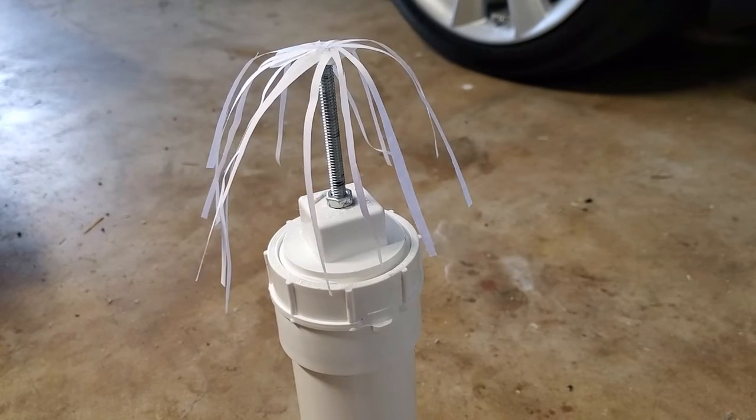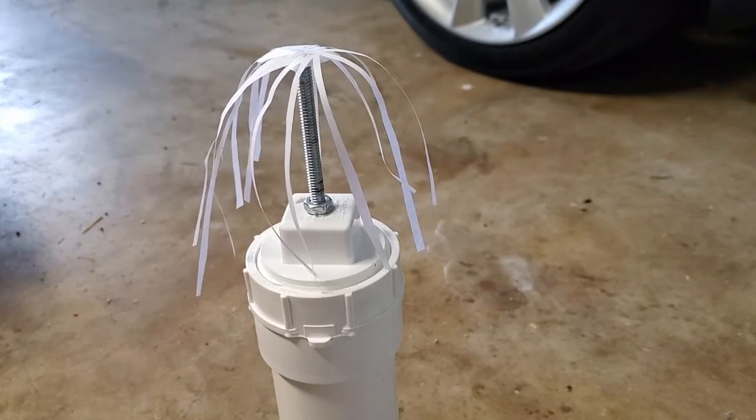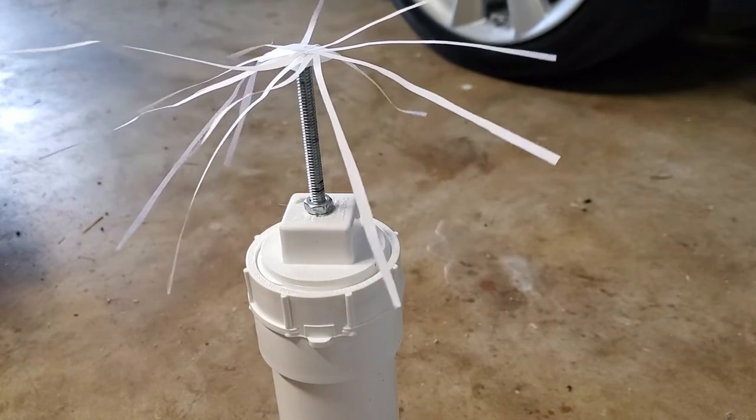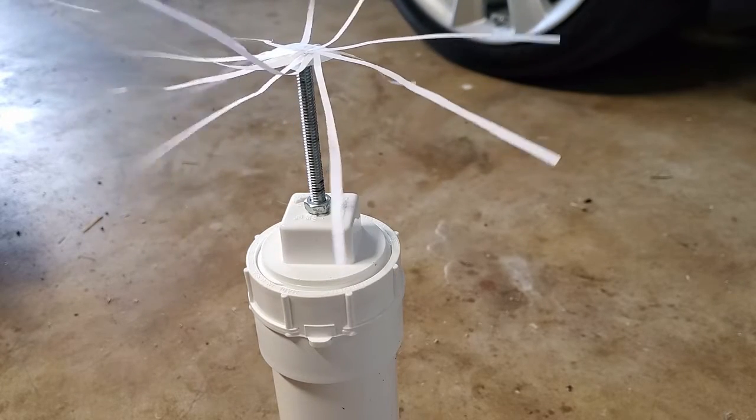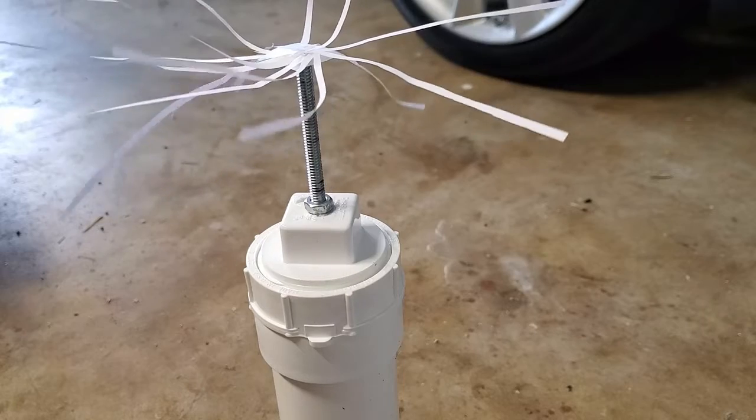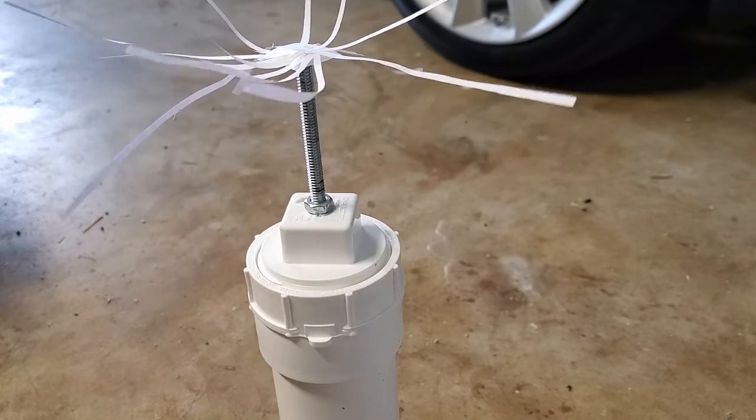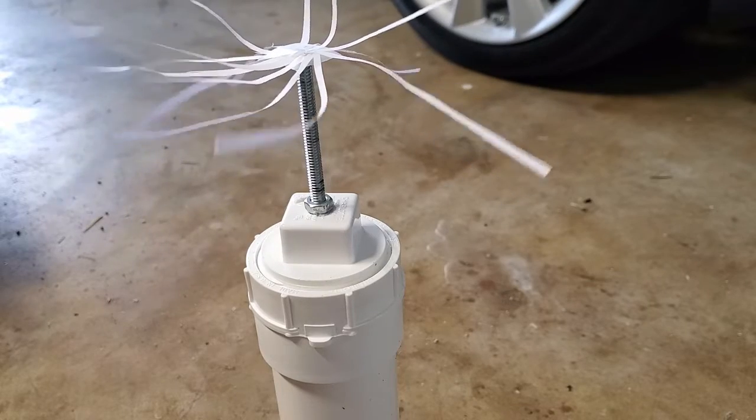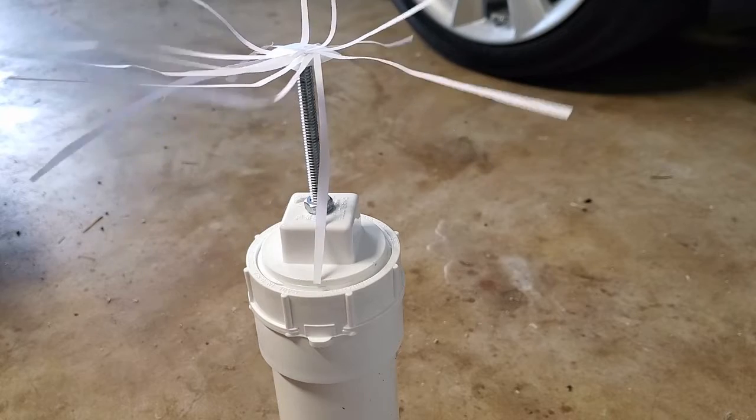The last thing I want to demonstrate is the powerful static charge the multiplier can produce. When these thin strips of paper are raised up to 120,000 volts, they repel each other and stand up. The whooshing sound you hear is actually the ion wind caused by the corona discharge. It's strong enough that I can feel it about two feet away, and it causes the paper to sway around.